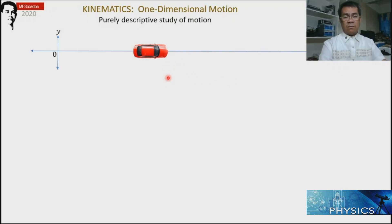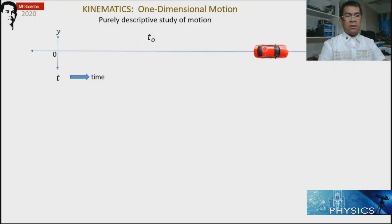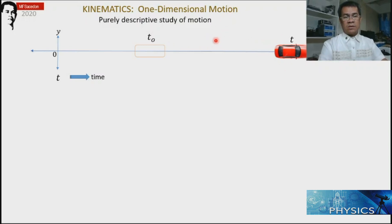The question is: how do we describe the particle? There are many ways to describe it. First, we can describe it in terms of time, wherein at the starting point we can call this t-naught for the initial time. As it moves, we have a final time — we have the initial and the final time. So therefore, we can always obtain the time interval.